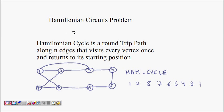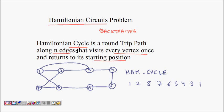In this lecture we are going to learn about the Hamiltonian cycle problem. First we will understand the problem, then we will try to solve it using the backtracking method. A Hamiltonian cycle is a round trip path along n edges that visits every vertex once and returns to the starting position. Given a graph with its vertices and edges, you start at some node, traverse all nodes, and come back to the same point.